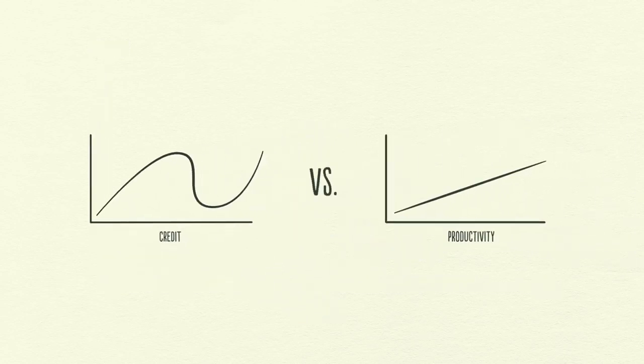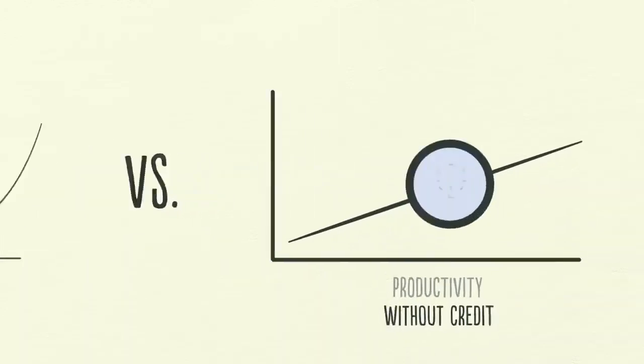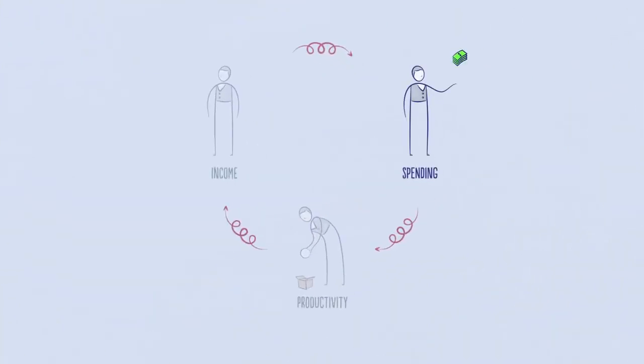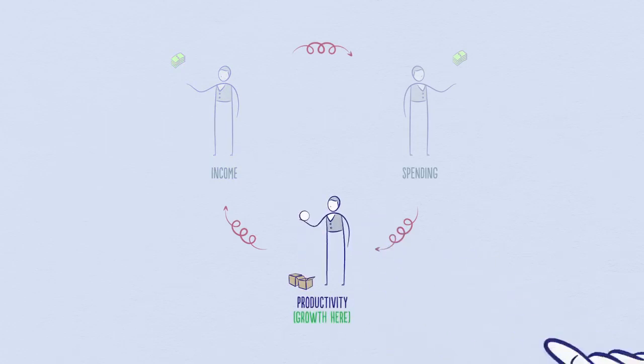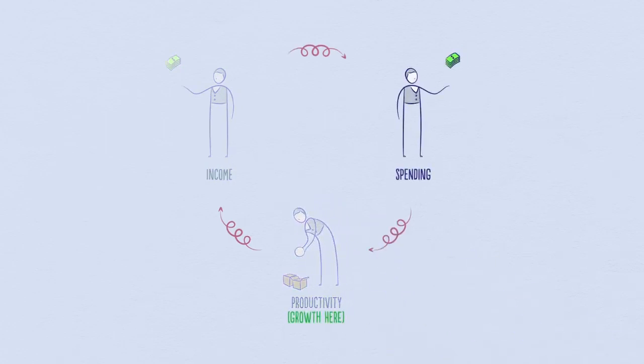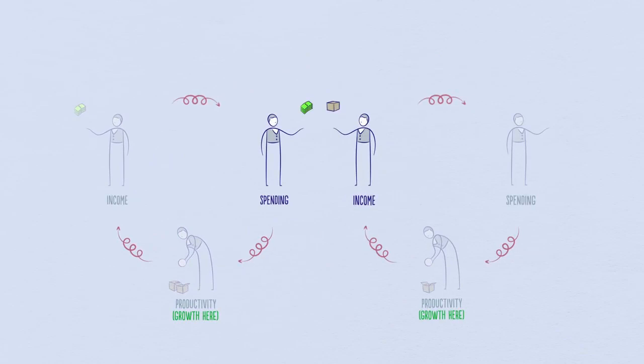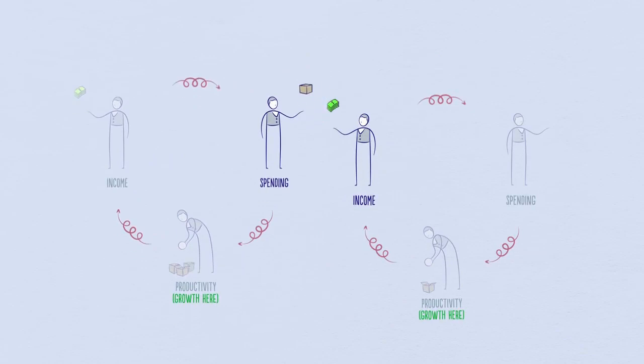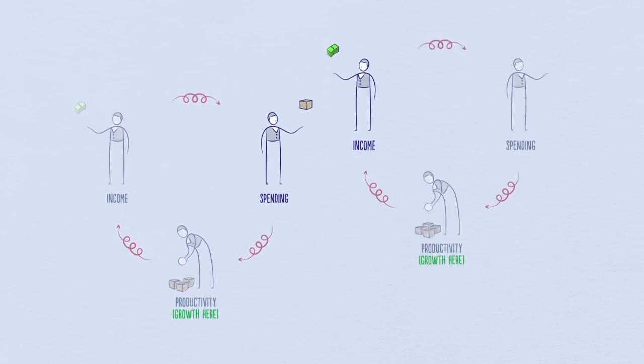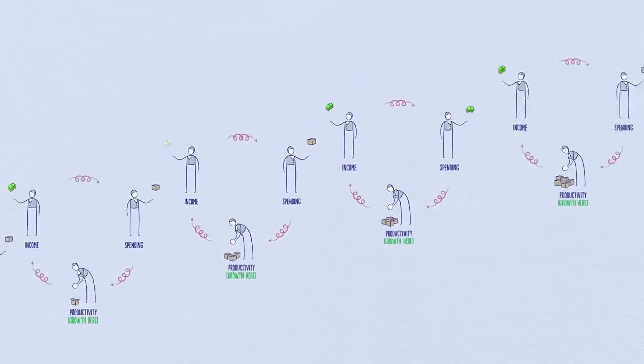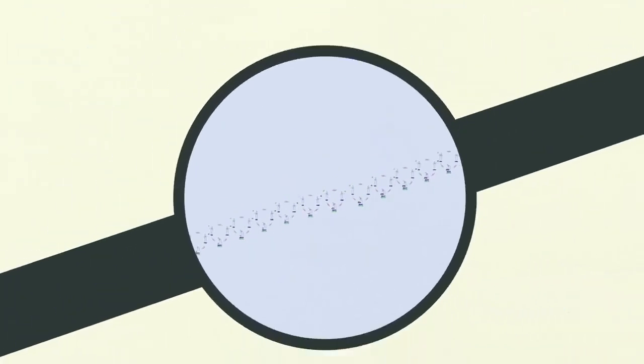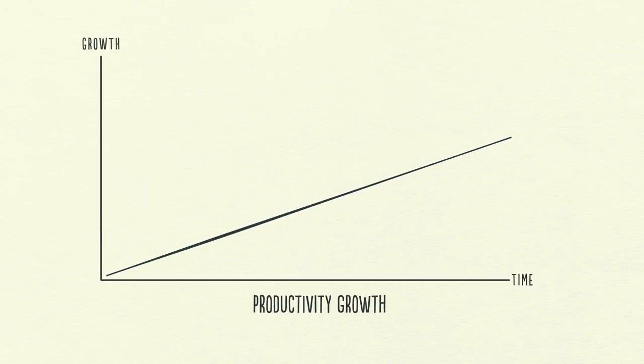Let's for a second imagine an economy without credit. In this economy, the only way I can increase my spending is to increase my income, which requires me to be more productive and do more work. Increased productivity is the only way for growth. Since my spending is another person's income, the economy grows every time I or anyone else is more productive. If we follow the transactions and play this out, we see a progression like the productivity growth line.